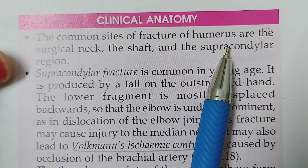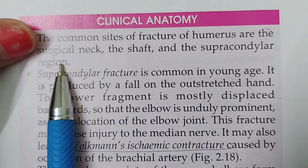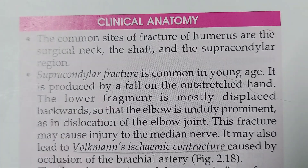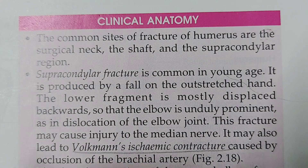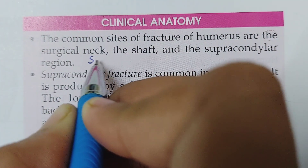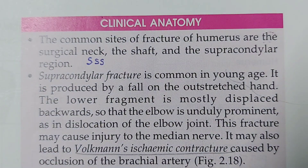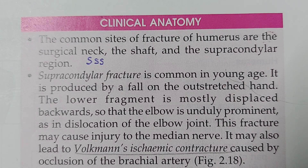The common sites of fracture of the humerus are the surgical neck, the shaft, and the supracondylar region. Remember these three common sites. The trick here is S, S, S — Surgical neck, Shaft, and Supracondylar region.